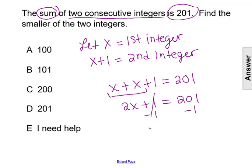We'll subtract 1 from both sides, giving us 2x equals 200. And dividing both sides by 2 gives us that x equals 100. So that is the first integer.